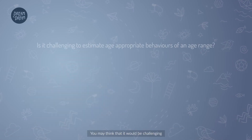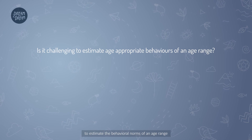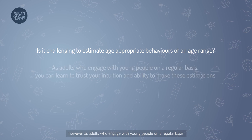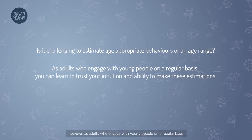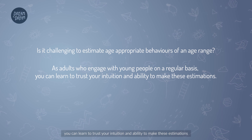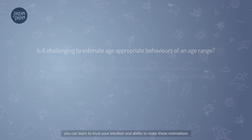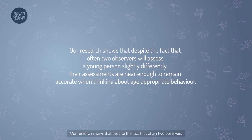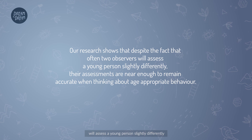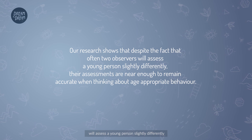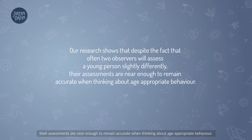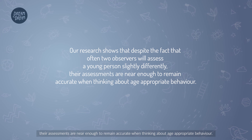You may think that it would be challenging to estimate age-appropriate behaviors for each age range. However, as adults who engage with young people on a regular basis, you can learn to trust your intuition and ability to make these estimations. Our research shows that despite the fact that often two observers will assess a young person slightly differently, their assessments are near enough to remain accurate when thinking about age-appropriate behavior.